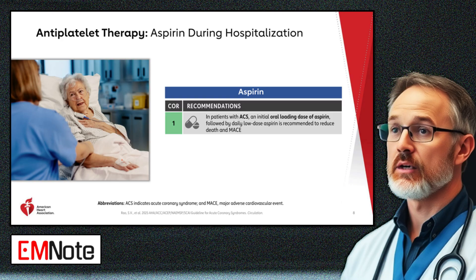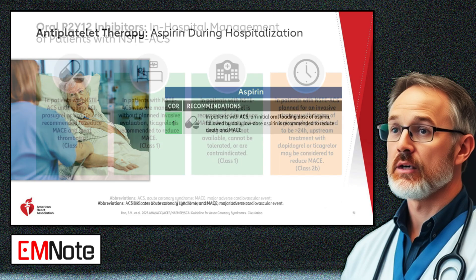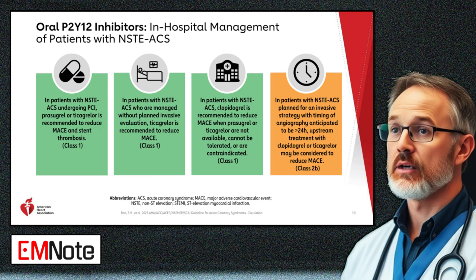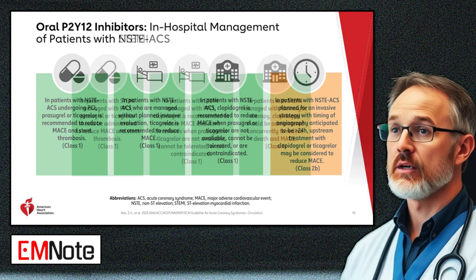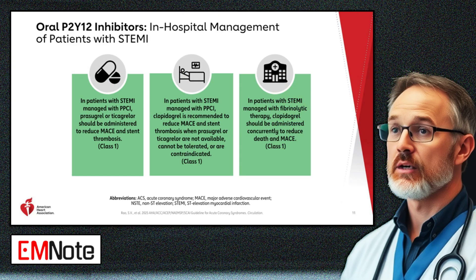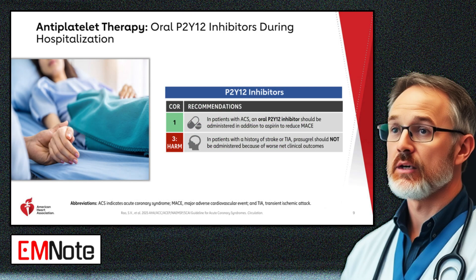Aspirin therapy is a cornerstone of acute coronary syndrome management. An initial oral loading dose followed by daily low-dose therapy is recommended to reduce mortality and major adverse cardiovascular events. Oral P2Y12 inhibitors, administered alongside aspirin, further reduce major adverse cardiovascular events. Prasugrel is contraindicated in patients with prior stroke or transient ischemic attack due to worse net clinical outcomes.